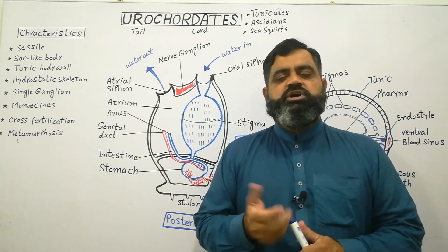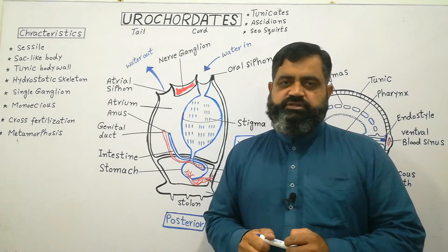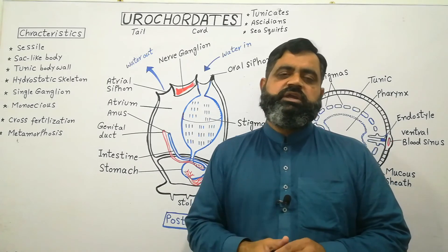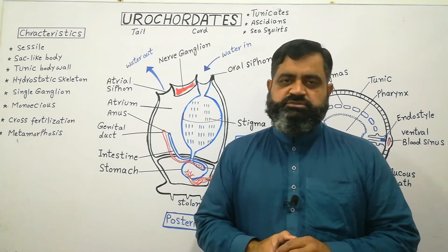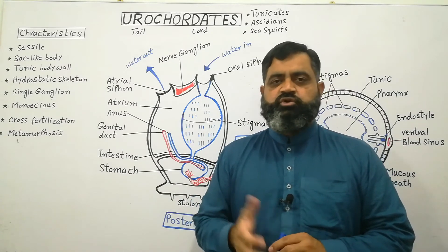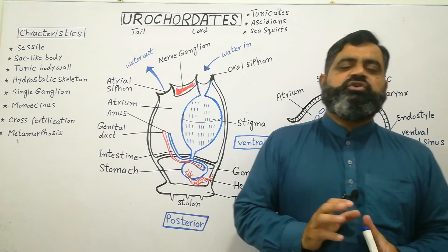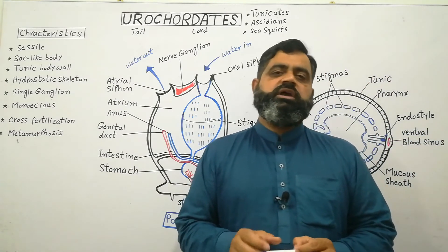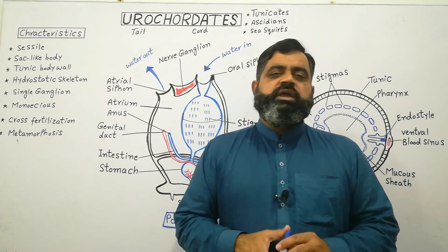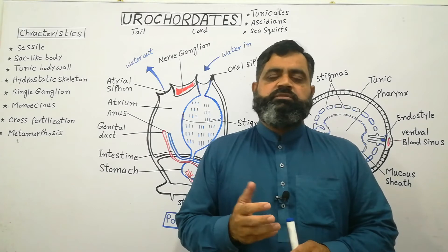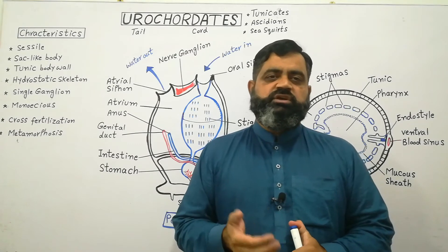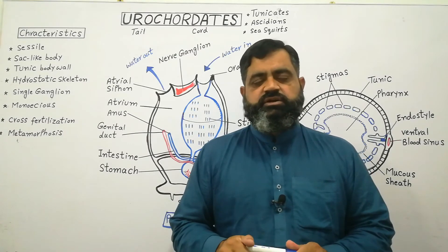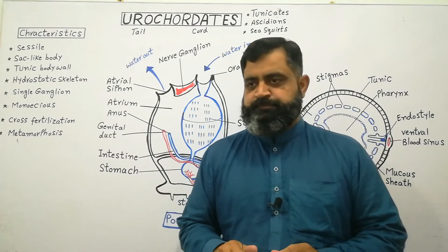These animals do not have a proper respiratory system; gaseous exchange takes place through the general body surface. They also lack a proper excretory system. They produce ammonia, which is subsequently excreted from the body with the help of large amounts of water.